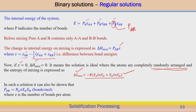It can also be shown that we can calculate the number of bonds between atoms A and B. Roughly, P_AB = N_A · Z · X_A · X_B, where N_A is Avogadro's number (number of atoms per mole), Z is the number of bonds per atom, and X_A and X_B are the fractions of atoms A and B present in the solution. This gives the total number of bonds per mole between atoms A and B.